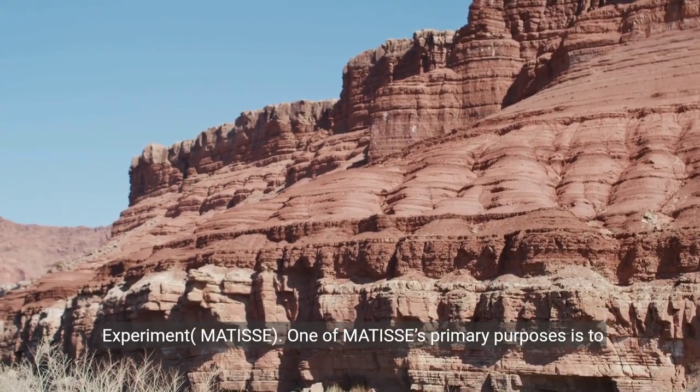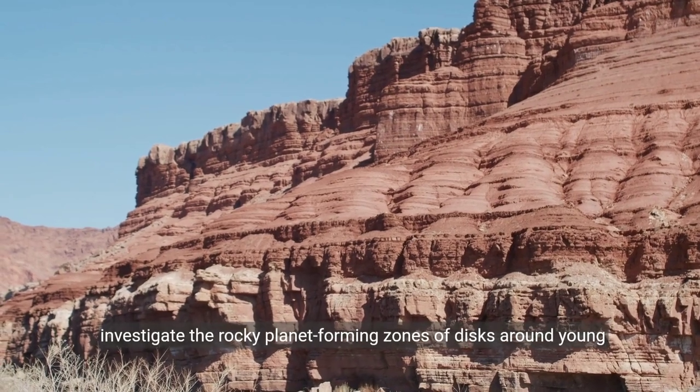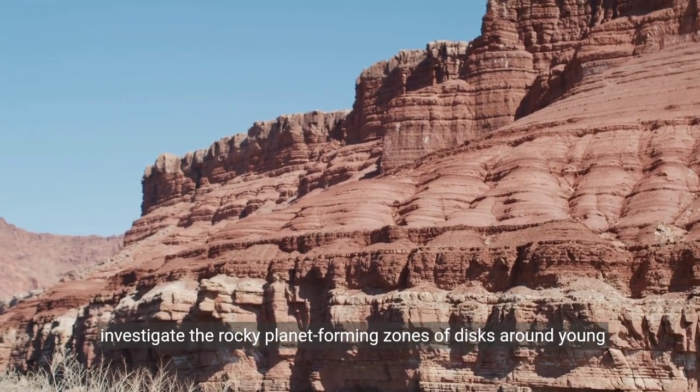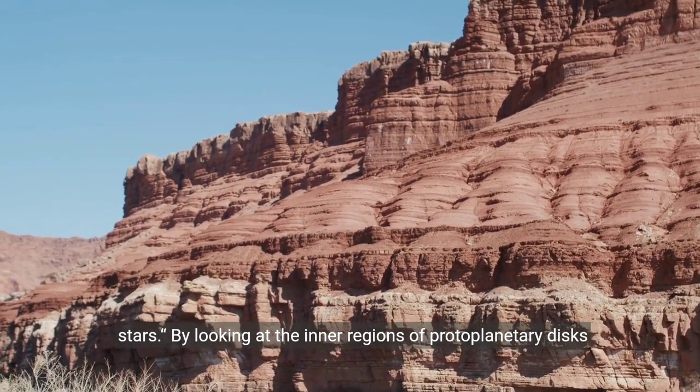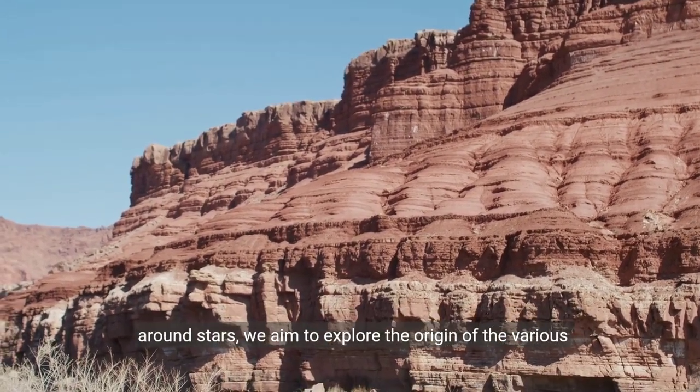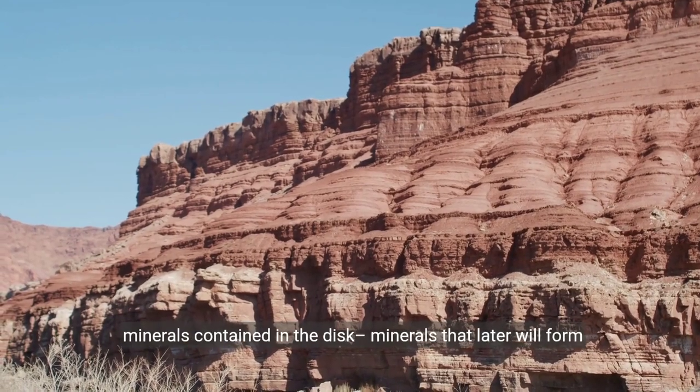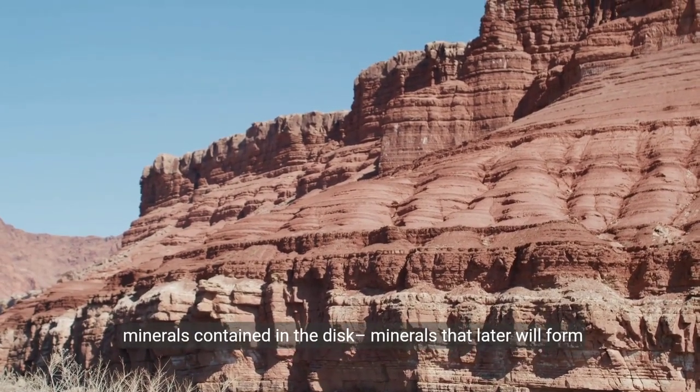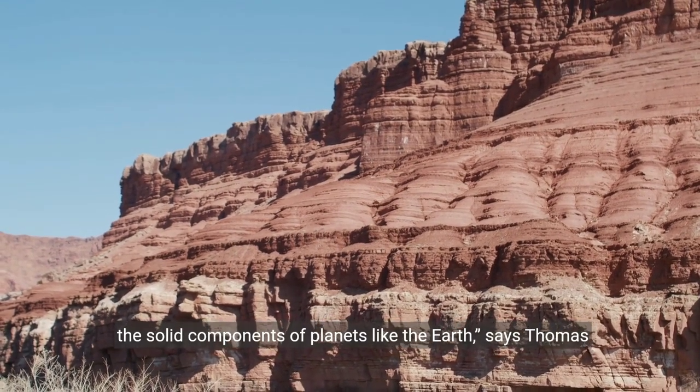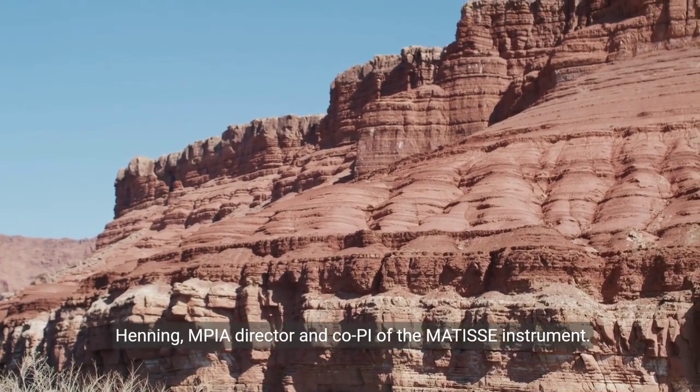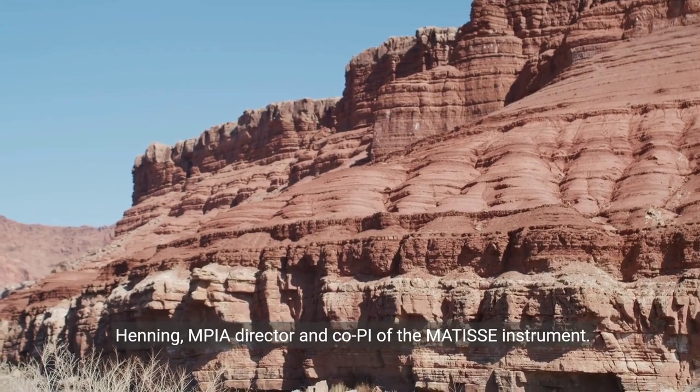One of MATIS's primary purposes is to investigate the rocky planet-forming zones of disks around young stars. By looking at the inner regions of protoplanetary disks around stars, we aim to explore the origin of the various minerals contained in the disk, minerals that later will form the solid components of planets like the Earth, says Thomas Henning, MPIA director and co-PI of the MATIS instrument.